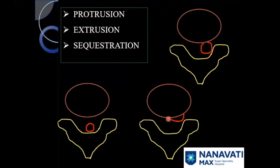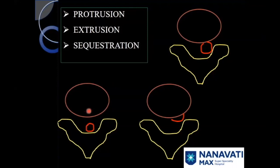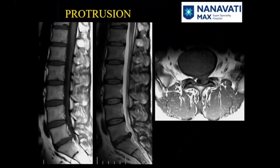When the base of the herniated disc is broad and the apex is narrow, it is called protrusion. When the herniated nuclear fragment separates out from the parent disc, it is called sequestration.